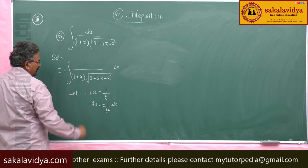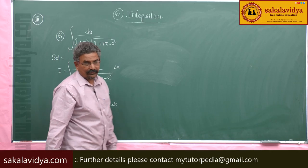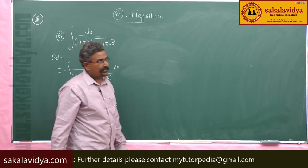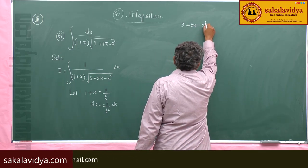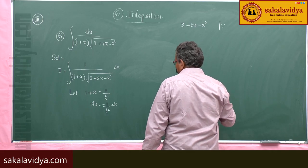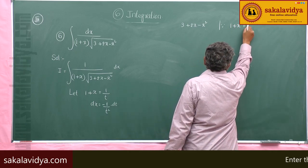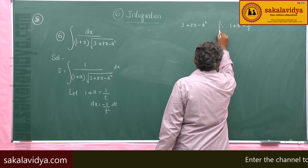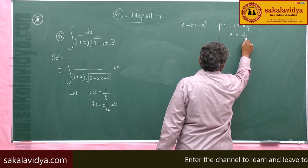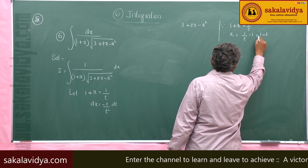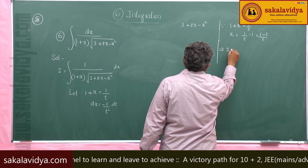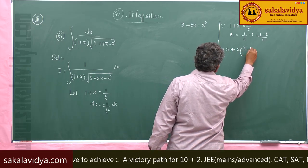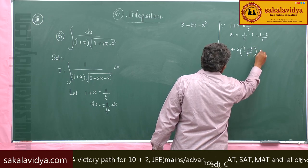Now let us express 3 plus 2x minus x squared in terms of t. Since 1 plus x equals 1 by t, x becomes (1 by t) minus 1, which equals (1 minus t) by t. So 3 plus 2x minus x squared becomes 3 plus 2 times (1 minus t) by t minus the quantity (1 minus t) by t, whole squared.